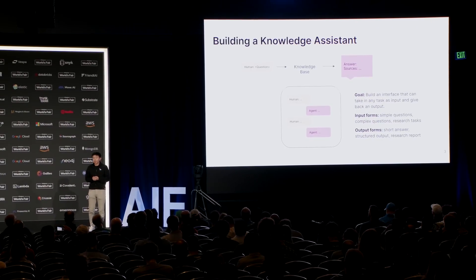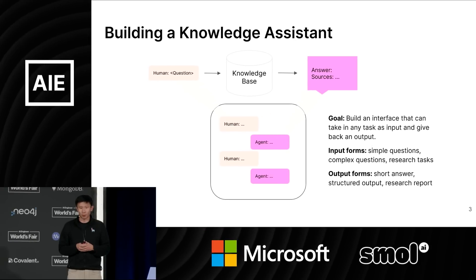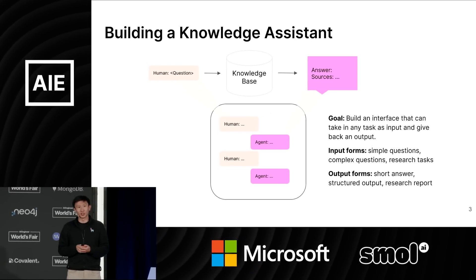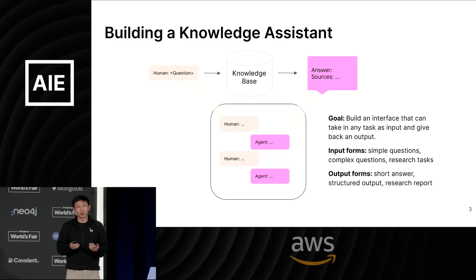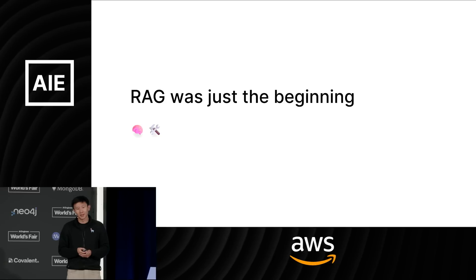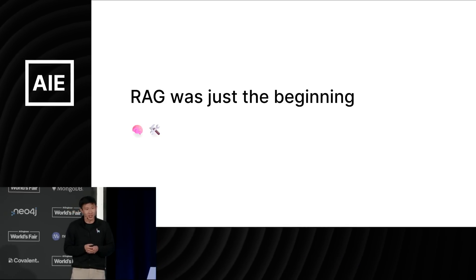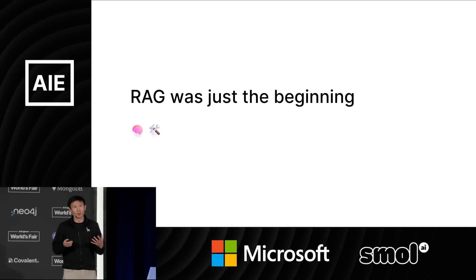Let's talk about specifically this idea of building a knowledge assistant, which we've been very interested in since the very beginning of the company. The goal is to basically build an interface that can take in any task as input and get back some sort of output. The input forms could be a simple question, a complex question, or a vague research task. The output forms could be a short answer, a research report, or a structured output. RAG was just the beginning — last year I said that RAG was basically just a hack, and there's a lot of things you can do on top of RAG to make it more advanced and sophisticated.